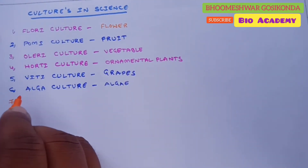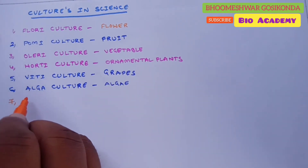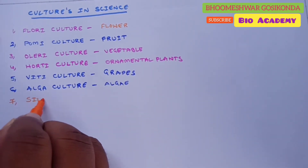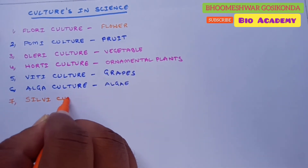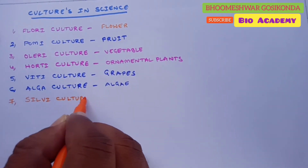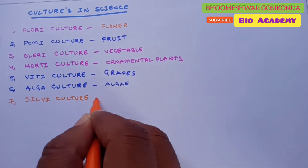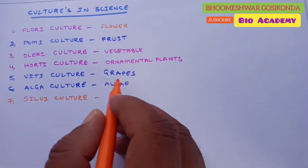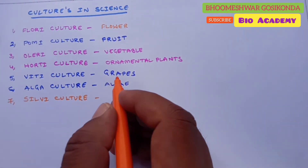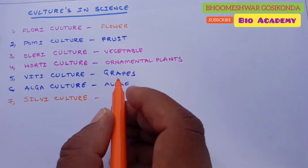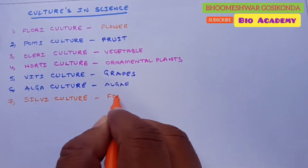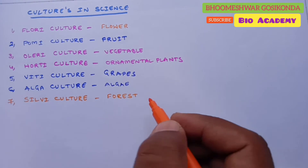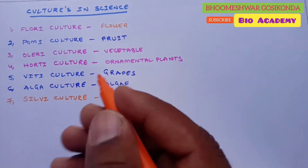Next is silviculture. Silviculture is the practice of controlling the growth, composition, and structure, and quality of forests to meet values and needs — specifically timber production. So silviculture is related to timber production.